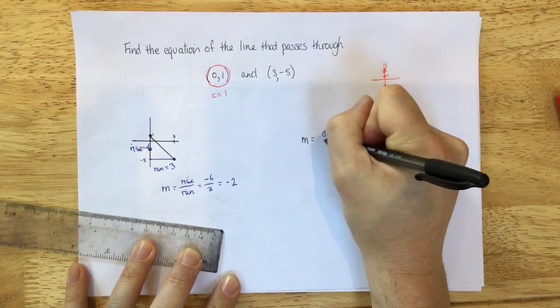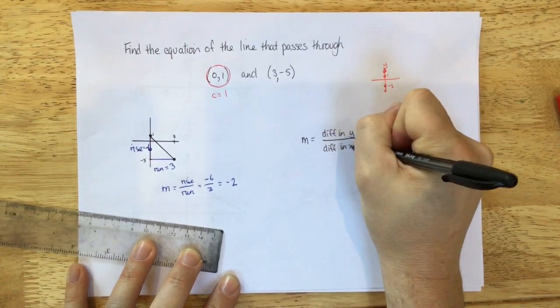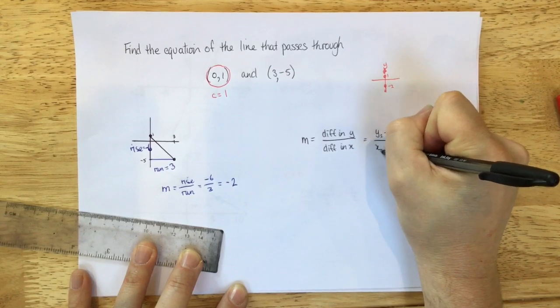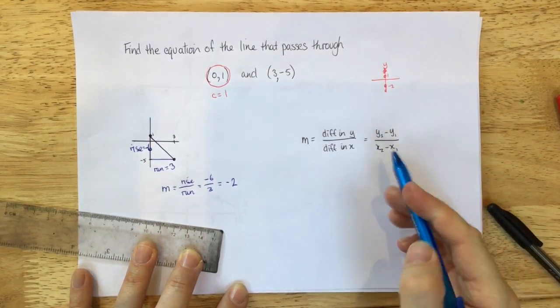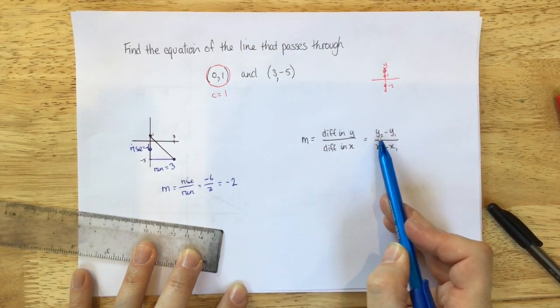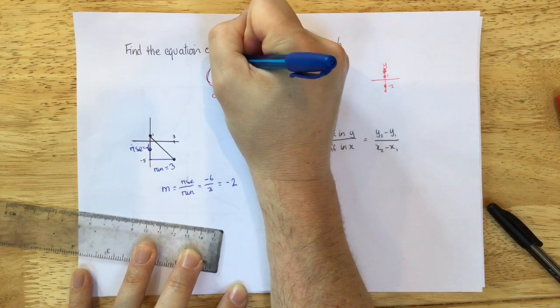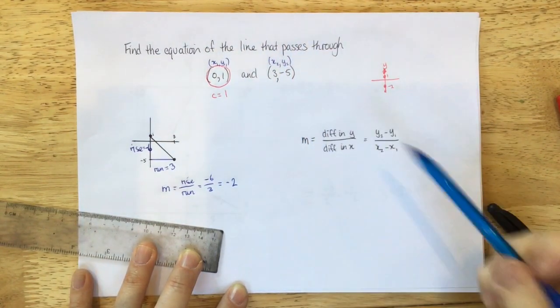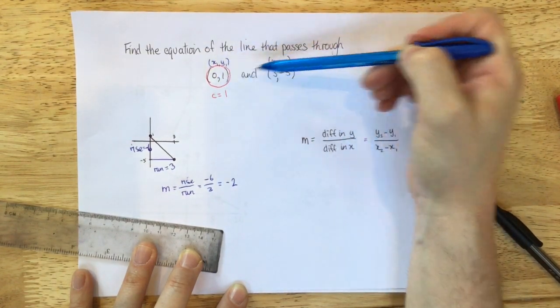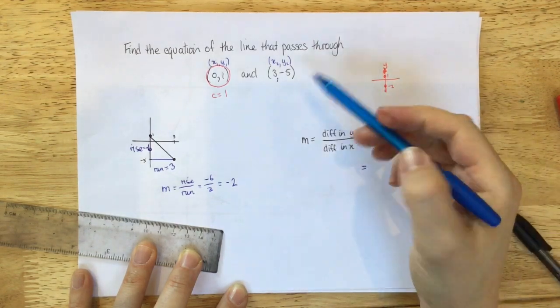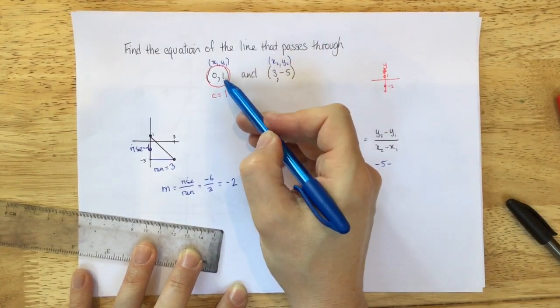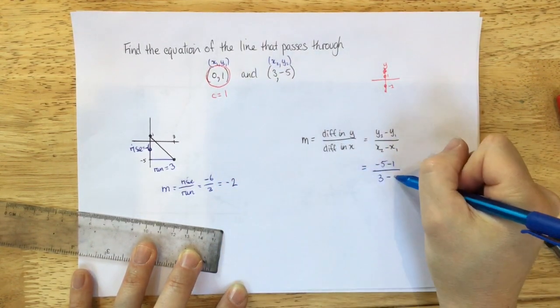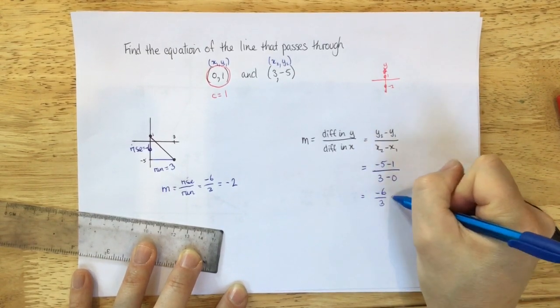The other way that we could find the gradient is if we know the gradient is the difference in the y-coordinates over the difference in the x-coordinates. And sometimes you'll see that written as y2 minus y1 over x2 minus x1. And all of these saying, okay, this is the y value from the first bracket, this is the y value from the second bracket. So in this case, if I wrote this, this would be x1, y1, and this would be x2, y2. x1 is 0, x2 is 3. y1 is 1, y2 is minus 5. And so we can fill this in. y2 minus 5, take away y1, so take away 1, divided by x2, which is 3, take away x1, which is 0. And we get minus 6 over 3, which is negative 2.